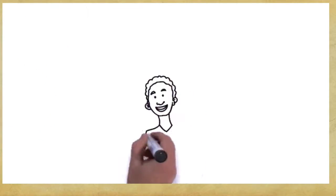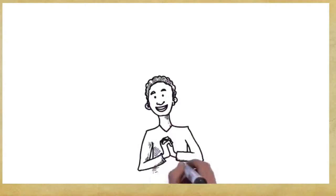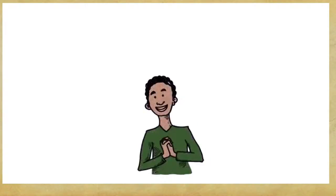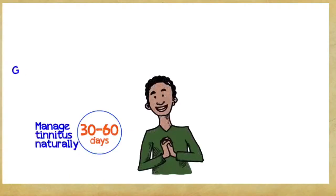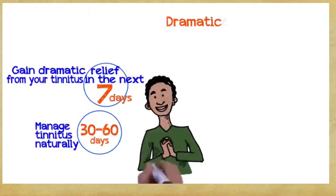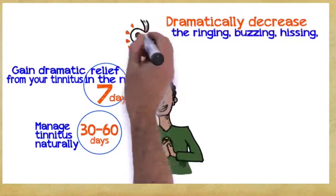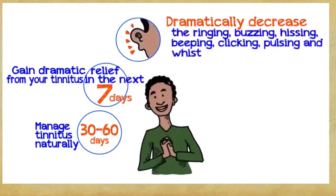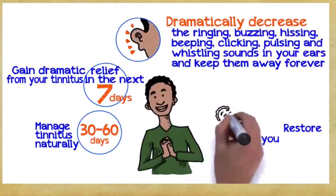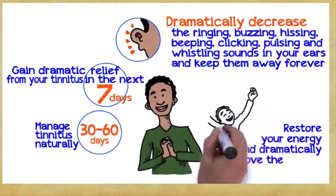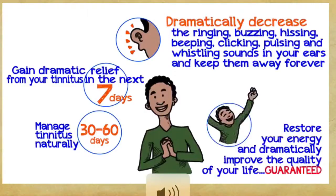So, what can you gain if you embrace these three easy principles? Well, you can manage tinnitus naturally within 30 to 60 days. Gain dramatic relief from your tinnitus within the next seven days. Dramatically decrease the ringing, buzzing, hissing, beeping, clicking, pulsing, and whistling sounds in your ears and keep them away forever. Restore your energy and dramatically improve the quality of your life, guaranteed.